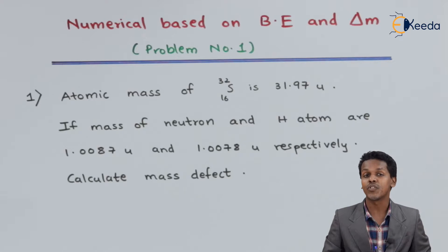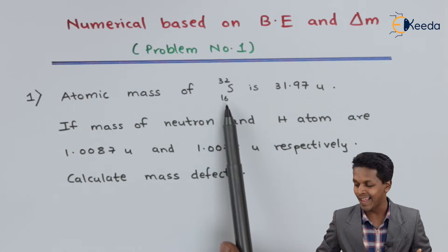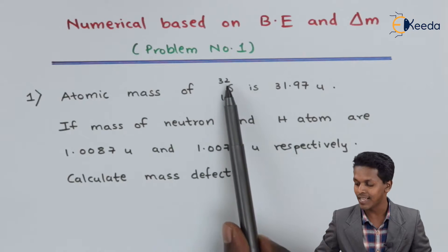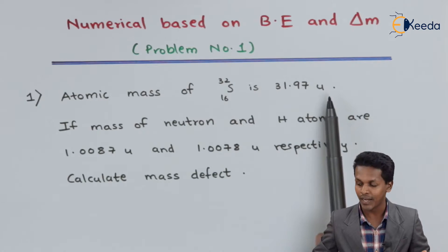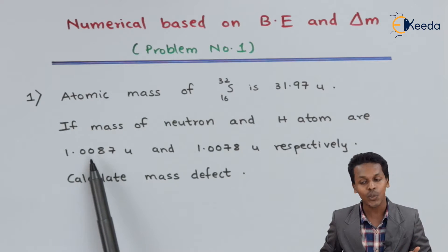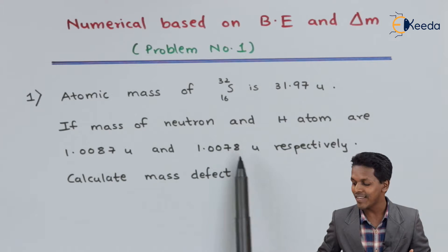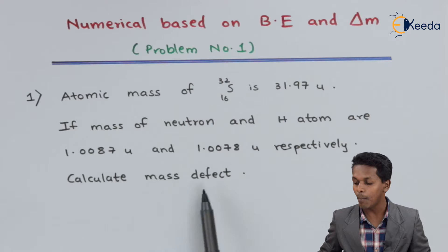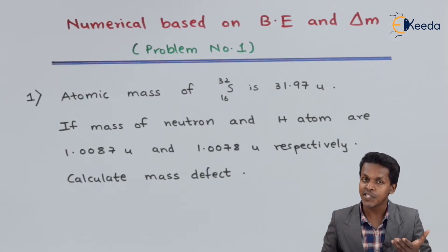So friends, this is the question which we have to solve. The atomic mass of sulfur having atomic number 16 and atomic mass number 32 is given as 31.97 unified mass units. The mass of the neutron and the hydrogen atom are 1.0087 unit and 1.0078 unit respectively. Calculate the mass defect.